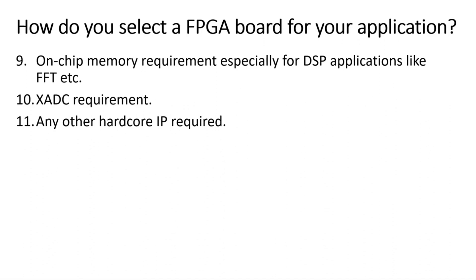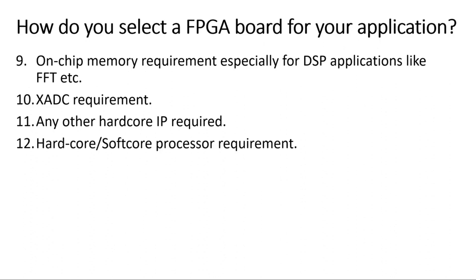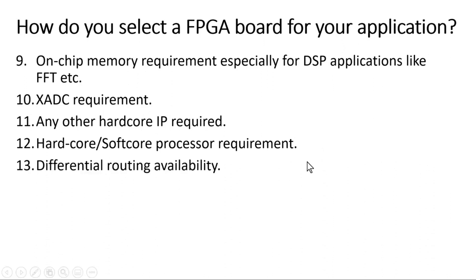The twelfth point is hard-core or soft-core processor requirement. If your application requires a processor hard-coded inside the FPGA device — specifically an ARM processor — then you must go for a Zynq device where ARM cores are hard-coded inside the FPGA. These devices are a bit costlier but very effective. If you need a soft-core processor, you can implement it in programmable fabric. For your information, Xilinx also provides a free soft-core processor called MicroBlaze which you can choose as well.